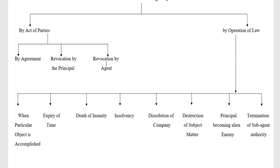Now let us see the aspects concerning termination by operation of law. There are eight circumstances under which, by operation of law, the agency can be terminated. The first is when the particular object is accomplished — for example, if the principal has given a task to the agent to sell his house, when the house has been sold, the object for which the task was given has been completed, and the agency is automatically terminated.